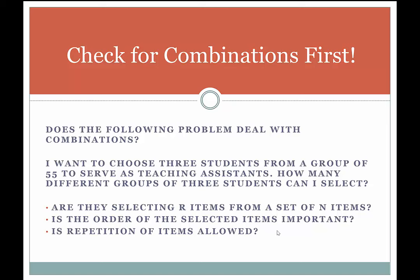Third question: is repetition of items allowed? For combinations, repetition must not be allowed. If I select Carlos as one of my TAs, is he available for selection again? No — I can't choose Carlos three times and claim I have three TAs. Once chosen, he's not available again. So repetition is not allowed — selection without replacement. That's the criteria for combinations. This problem should be solved with combinations: 55 C 3, or '55 choose 3.' You can compute that in your calculator. Avoid computing 55 × 54 × 53 — that assumes order is important and would count rearrangements of students as different.